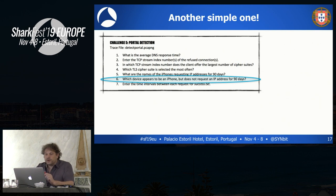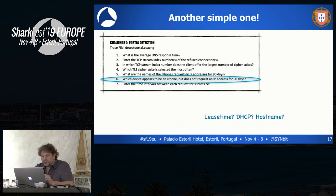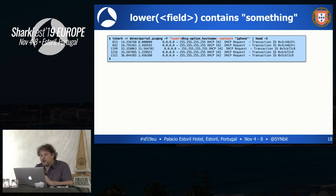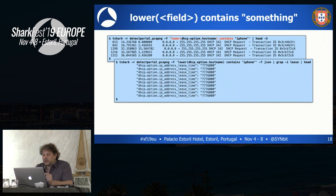The second example: which device appears to be an iPhone but does not request an IP address for 90 days? I need to find devices in this trace file that appear to be an iPhone. I need to look at DHCP hostnames. So first, I'm going to read the file and look for 'iPhone' in the DHCP option hostname. Since 'contains' is a case-sensitive operator and I'm not interested in case, I use the function lower(), which you can use to lower the contents of a field, and then compare it to lowercase letters. This is a case-insensitive search for all DHCP packets where the hostname contains 'iPhone'.